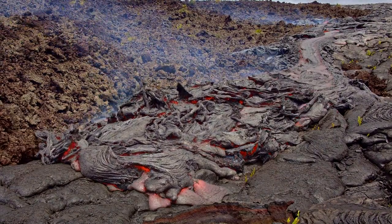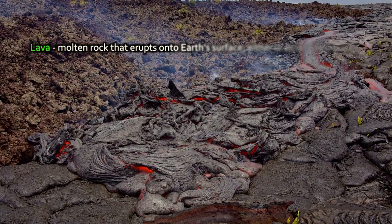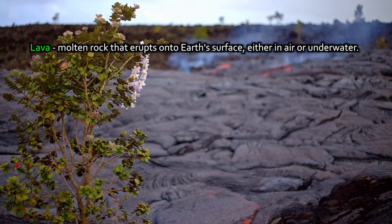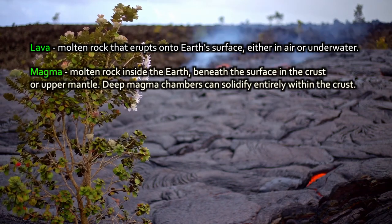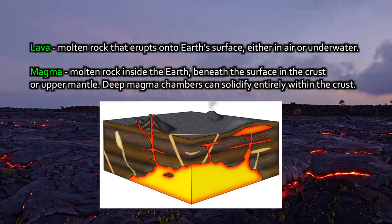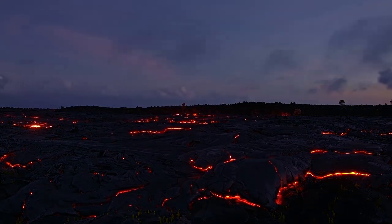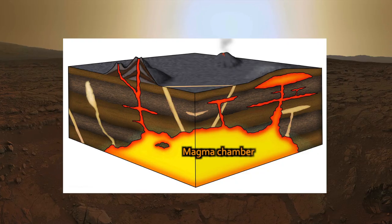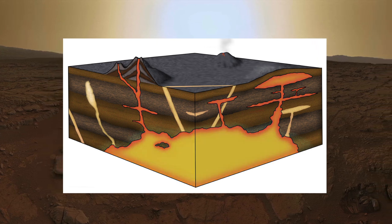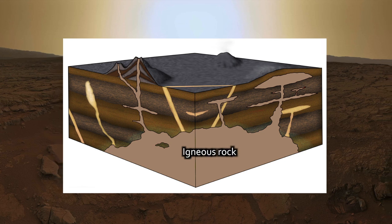Igneous rock is formed from the cooling and freezing solid of what was originally molten magma or lava — geological terms with specific meanings. Lava is molten rock from below that erupts at the Earth's surface; when it breaks out into the surface air, it is lava. If it never erupts, if it stays within the Earth and solidifies before breaching the surface, then it is considered to be magma. Once magma or lava solidify, either at the surface or deep within the Earth's crust, they form igneous rock.